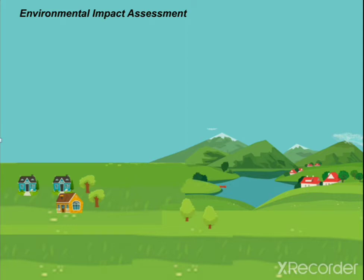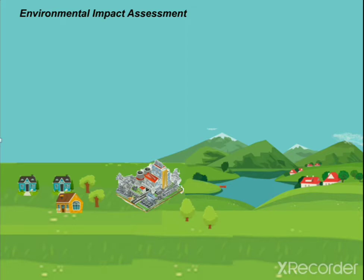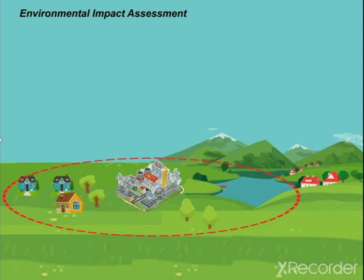Consider a site like this. In this, a proponent is proposing an industry over this particular place, which consumes a large amount of area. What are the impacts due to this particular project or during the execution of this project? It is the responsibility of the proponent to find out the impacts during the execution of this particular project in and around this particular area. As you can see, it is very close to a water body and it is surrounded by houses. So, what are the impacts?